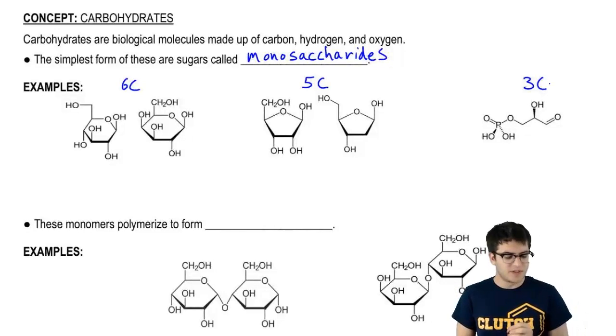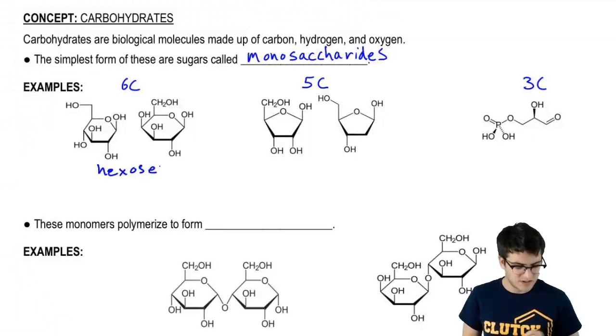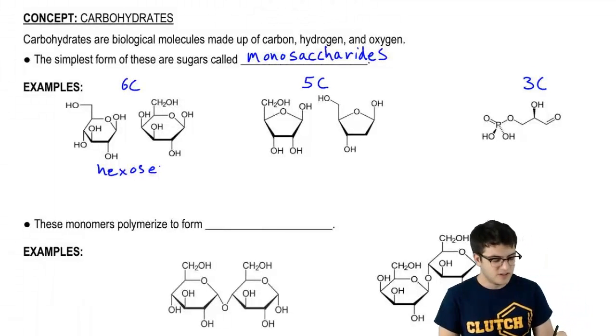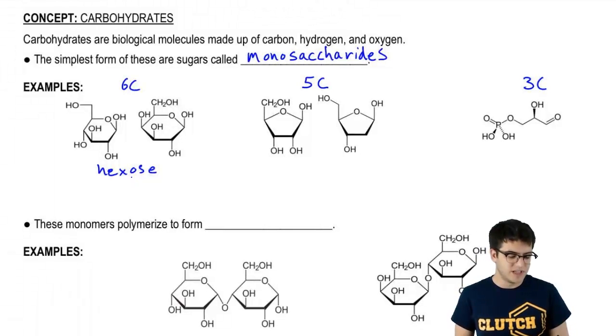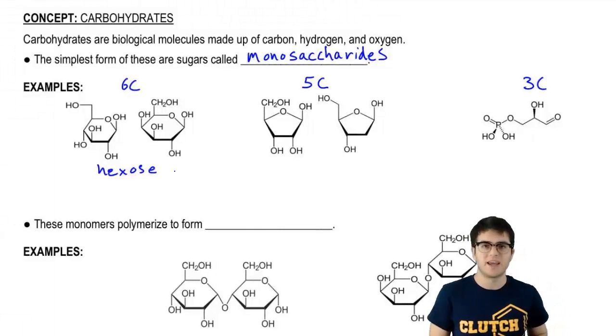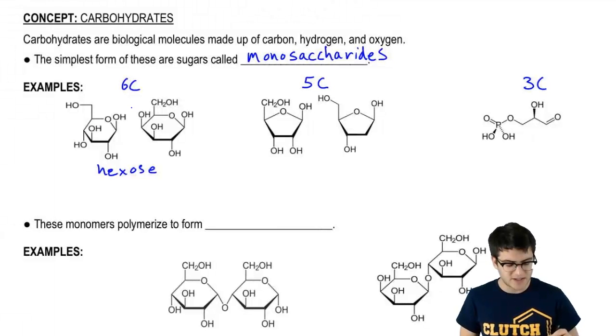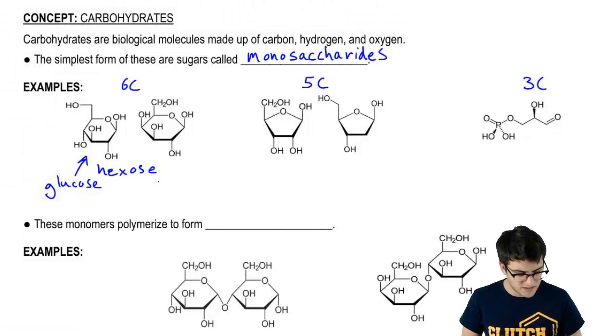With the six carbon sugars, we call them hexose. You'll notice that all the names of these sugars end in -ose. That's the signal that should tell you this is a sugar. These specific hexoses here are glucose, this molecule, and galactose, this molecule.